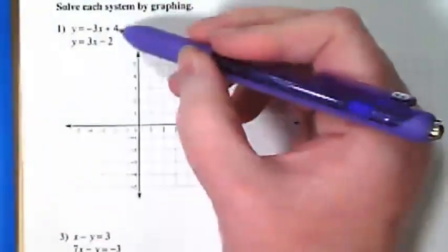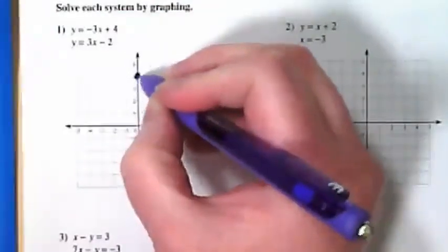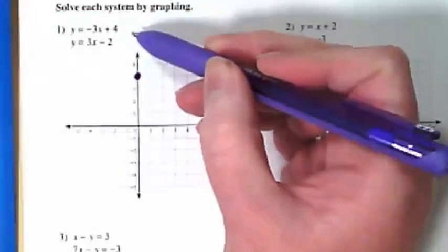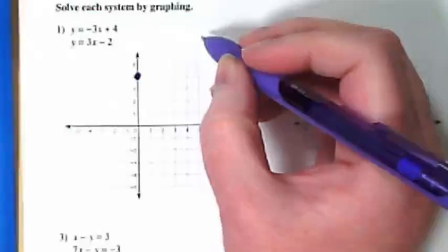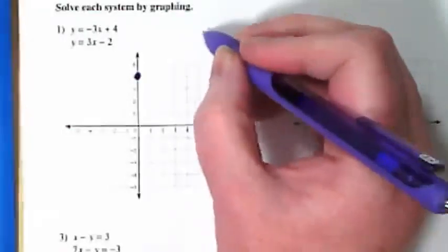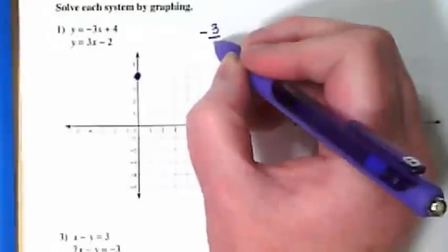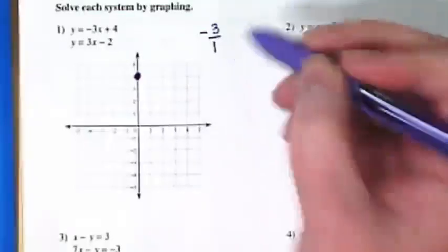All right, so to start off with this one, if we're going to graph this first equation, we're going to start with our y-intercept at 4. Our slope is negative 3. Remember, slope is always rise over run. What's invisible there? It's negative 3 over 1. So our rise is 3, our run is 1.